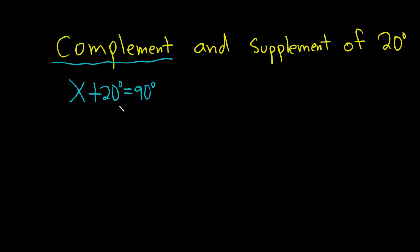And you could even do it in your head. You could just subtract 20 in your head and say the answer is 70 because 90 minus 20 is 70. And if you add 20 and 70, you get 90. That's how you know the answer is 70.